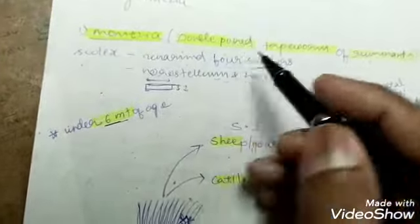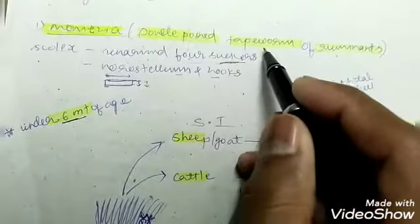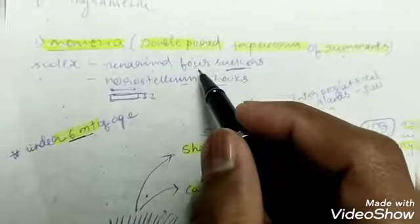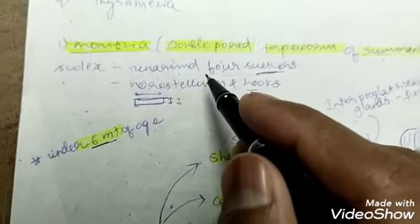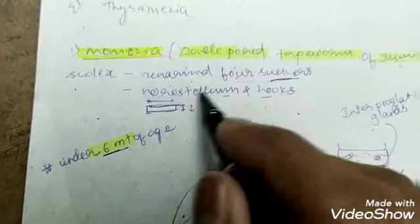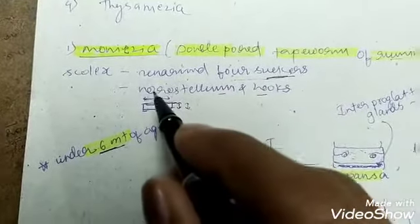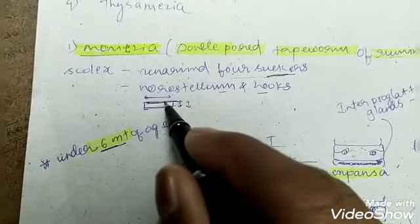Let us come to Moniezia. These are also known as double-pored tapeworms of ruminants. The scolex has four suckers. Rostellum and hooks are absent. The proglotids are wider in nature.